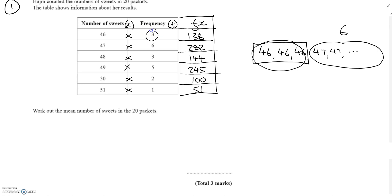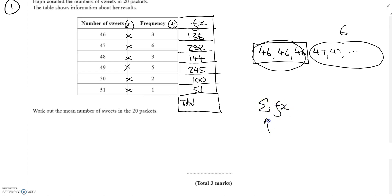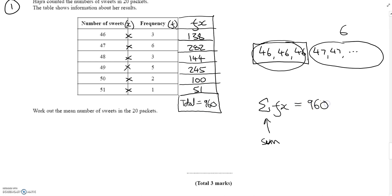So we're multiplying along our table: 3 packs with 46 sweets gives 138 total; 6 with 47 gives 282; and so on. At the bottom of the table we find the total, which we call the sum of fx — written with the sigma symbol. We add up all these values: 138 + 282 + 144 + 245 + 100 + 51 = 960. That's the total number of sweets across all 20 packets.